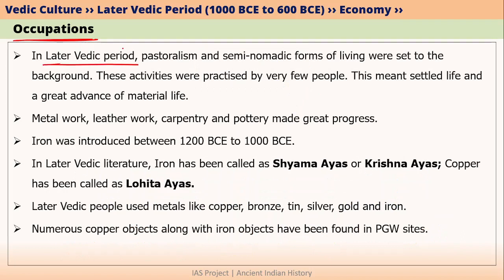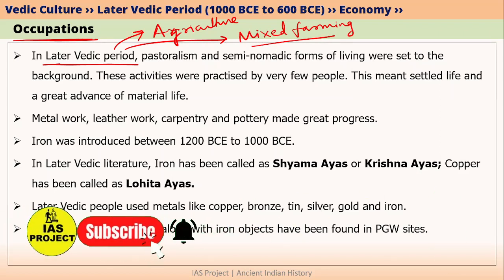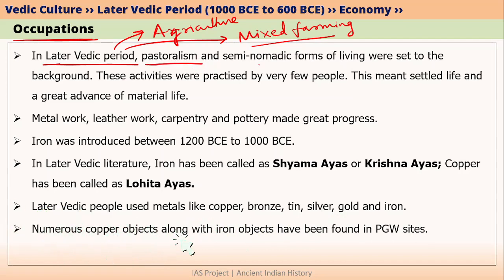In the later Vedic period, agriculture became very important. The later Vedic people practiced mixed farming, which simply means cultivation of crops along with raising of livestock — that is, raising of cattle. Within mixed farming, cultivation of crops was the most important activity. After cultivation of crops, they also raised animals. That is why there was a decrease in pastoralism and also a decrease in semi-nomadic forms of living.